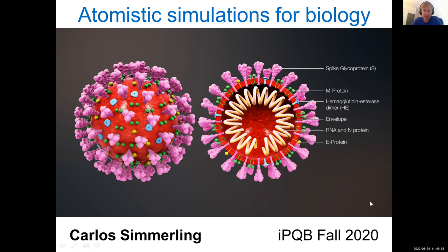This picture here is an overview of the architecture of the virus. There's a membrane that encapsulates the virus, and on the outside of the membrane are these spike glycoproteins in pink — that's what I'm going to end up talking about. There are some other membrane proteins, and on the inside there's the RNA genome and other proteins.